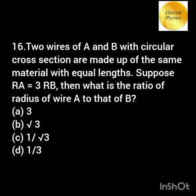Two wires A and B with circular cross section made up of the same material with equal lengths. Suppose Rₐ equals 3R_B — what is the ratio of the radius of wire A to that of wire B?